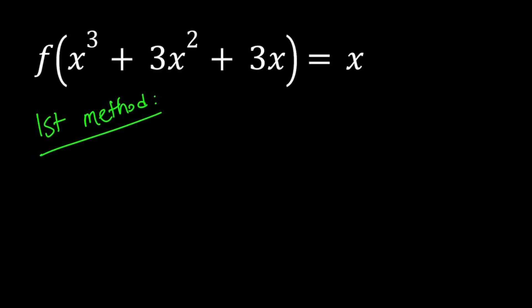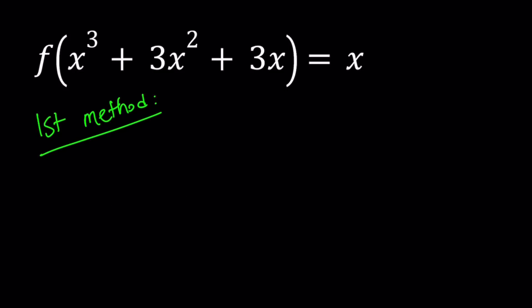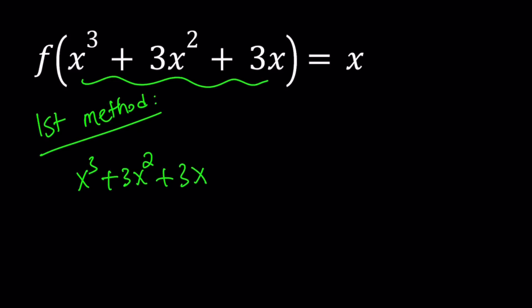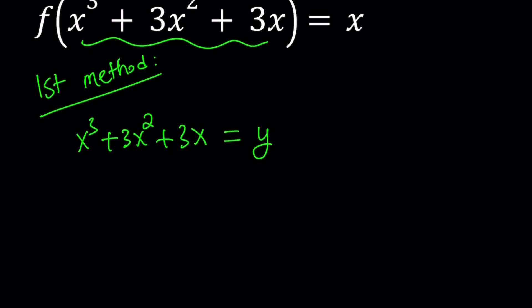Our first method is going to involve a kind of general method that can be used in many different situations. We're going to set the expression inside the parentheses equal to something using substitution. So let's set x cubed plus 3x squared plus 3x equal to y. Because we need to use substitution, putting y on the left-hand side turns this into a nice-ish cubic equation.